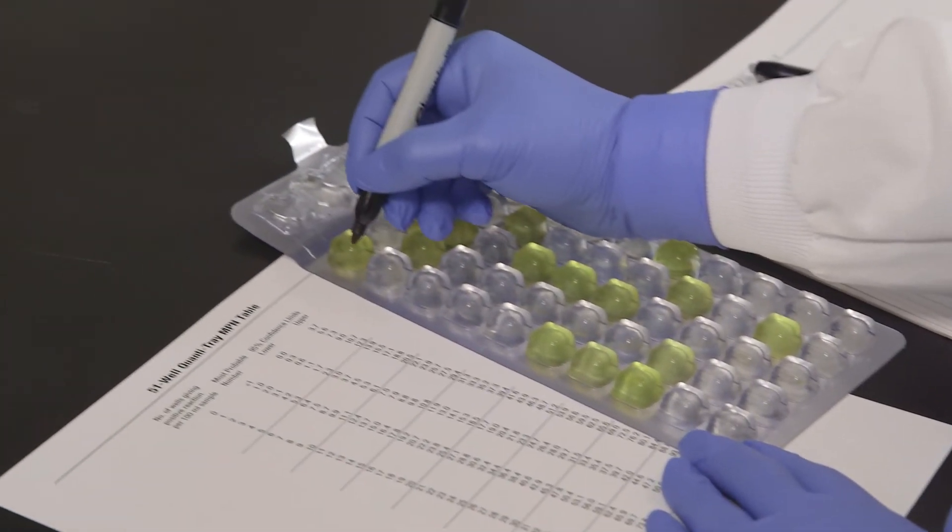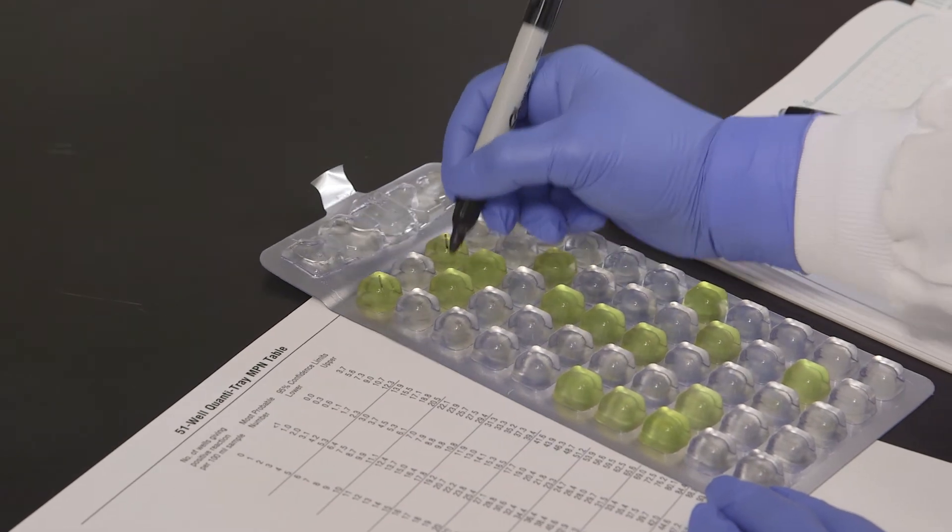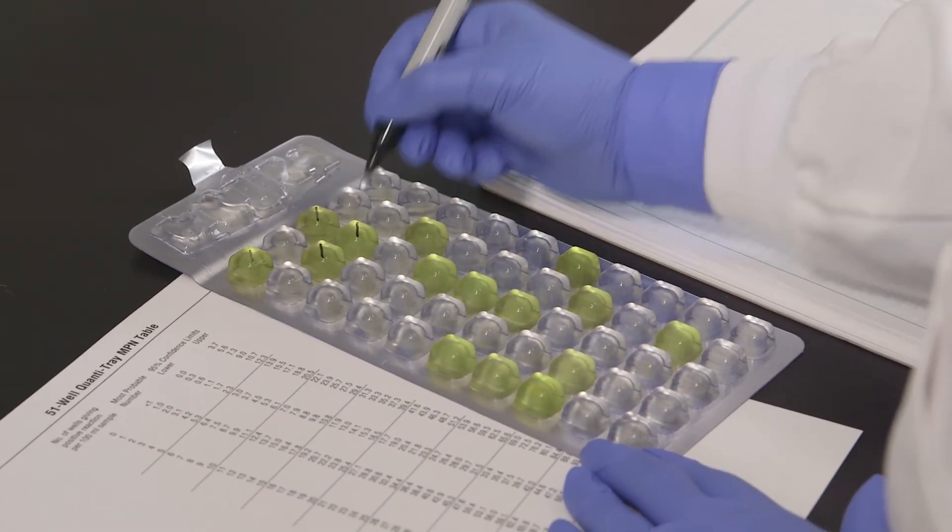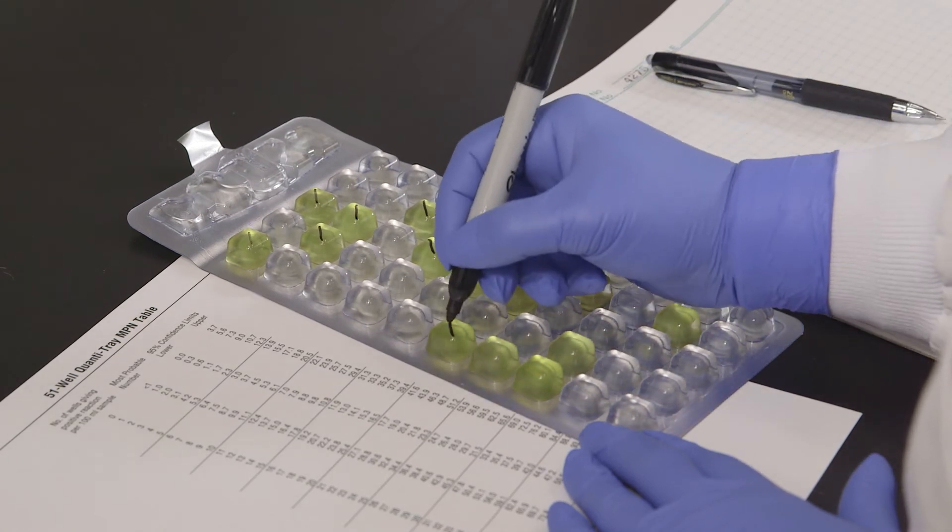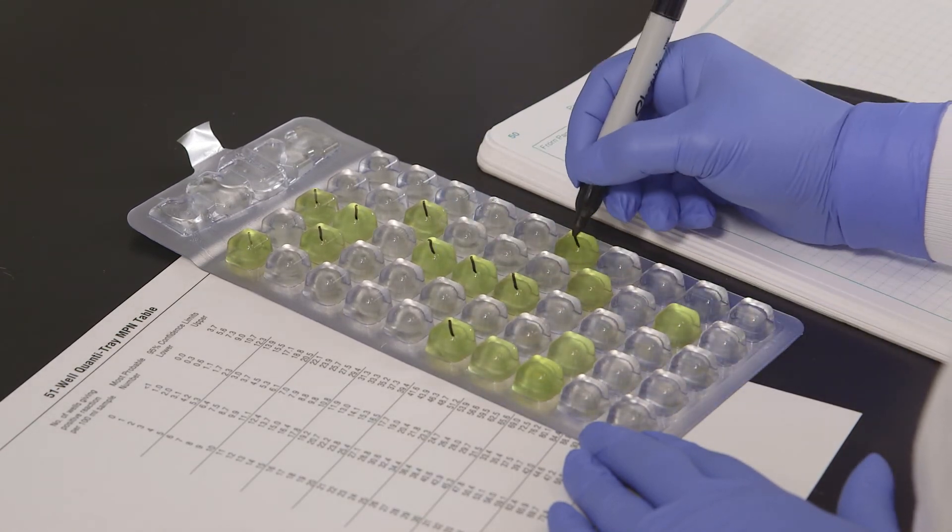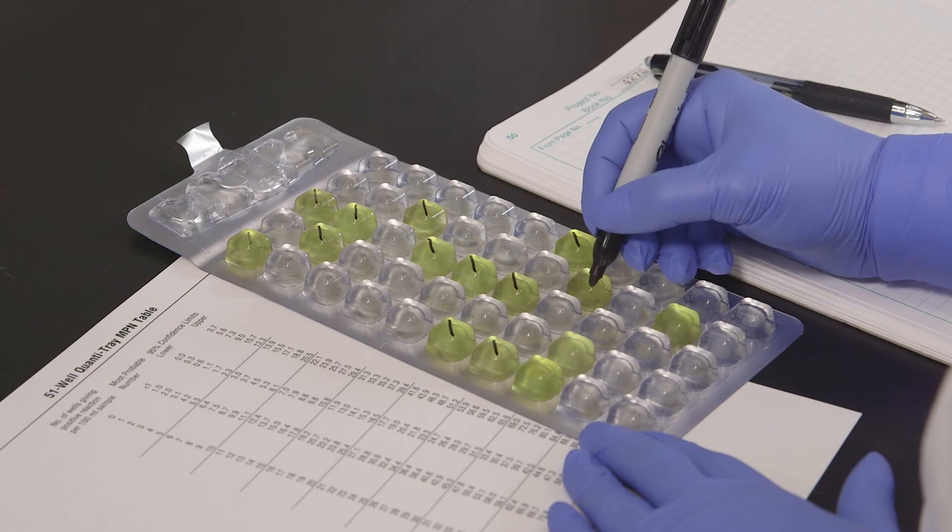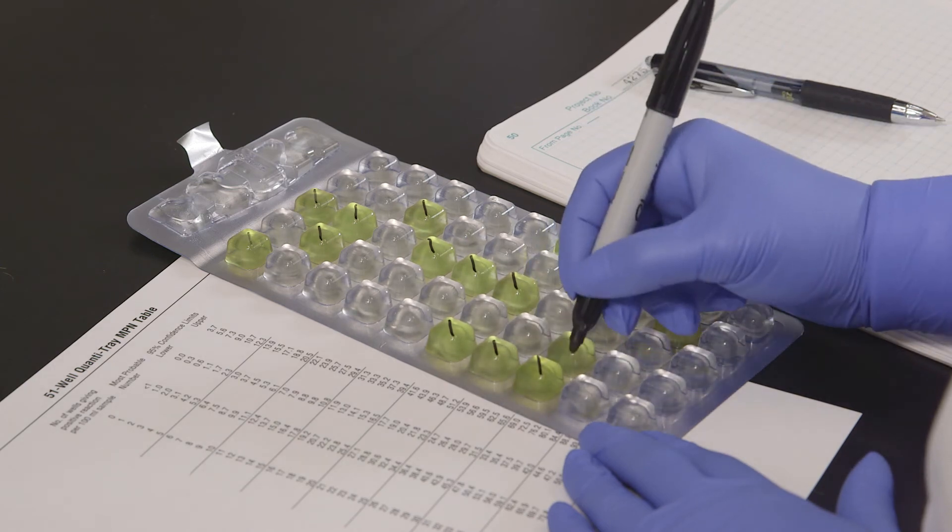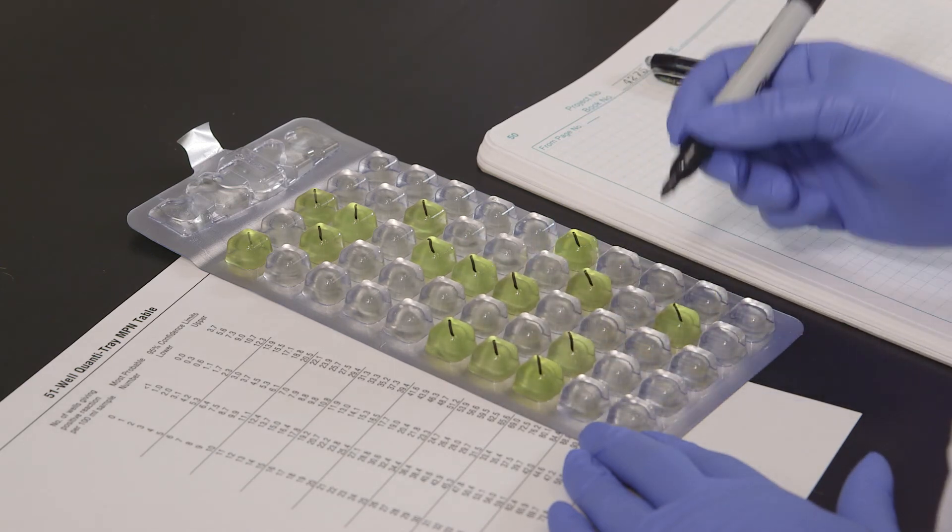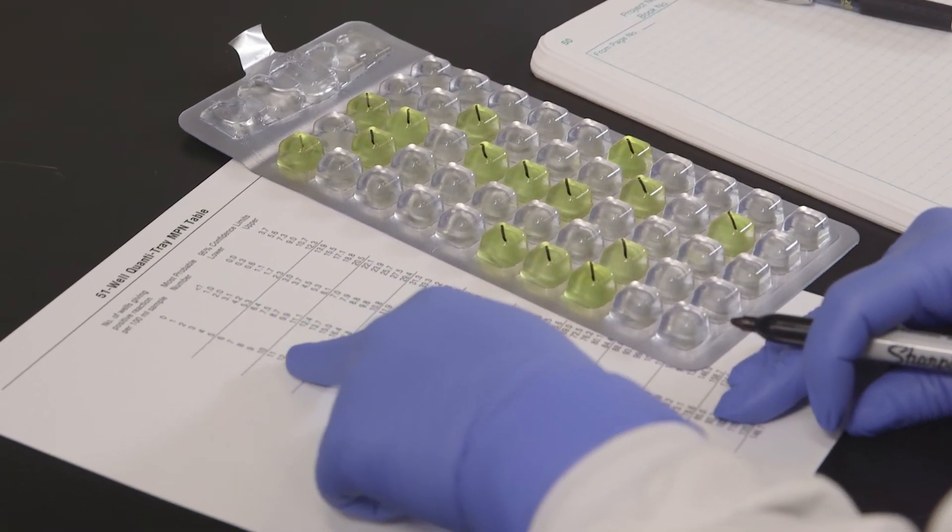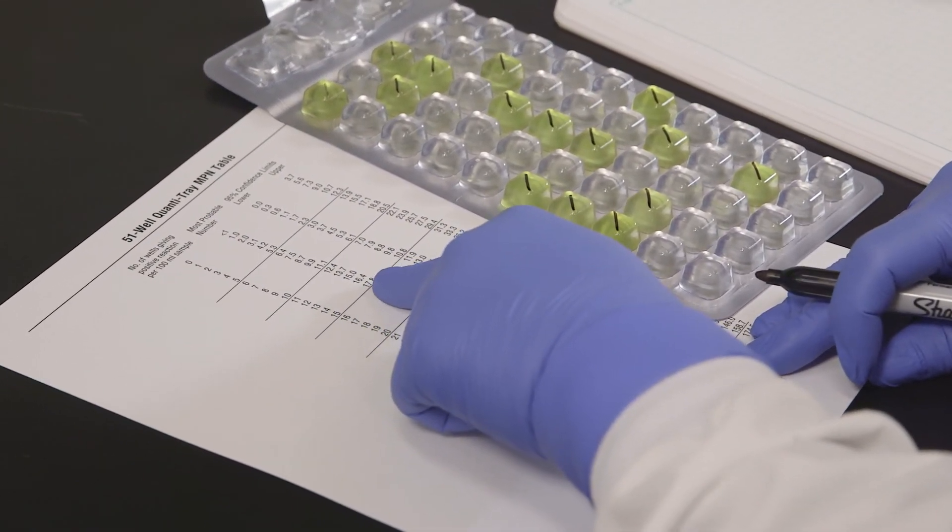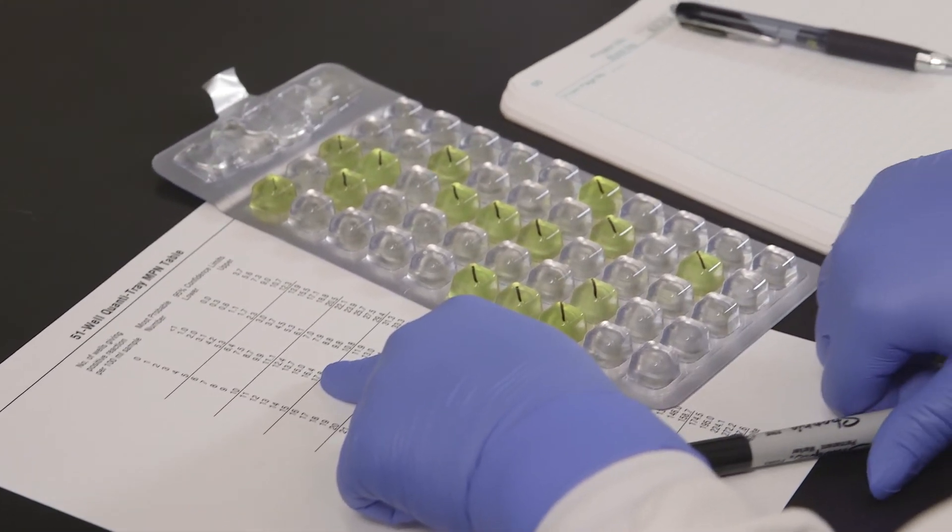After incubation mark each yellow well with a permanent marker including the large overflow well. To determine the number of total coliforms count the yellow wells that are equal to or greater than the comparator and then refer to the MPN table included with the Quantitrays. The most probable number of total coliforms for this example is 17.8 per 100ml. If using Quantitray 2000 count the overflow well as a large well.